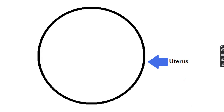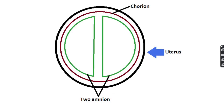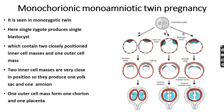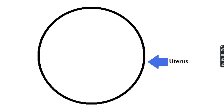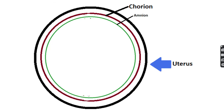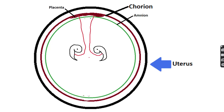In the monochorionic diamniotic diagram: single chorion, two amniotic cavities, two fetuses, single placenta. In monochorionic monoamniotic twin pregnancy, two inner cell masses are produced but are very close, so a single amniotic cavity and single yolk sac cavity is formed. Diagram: single chorion, single amniotic cavity, single placenta, and two fetuses.